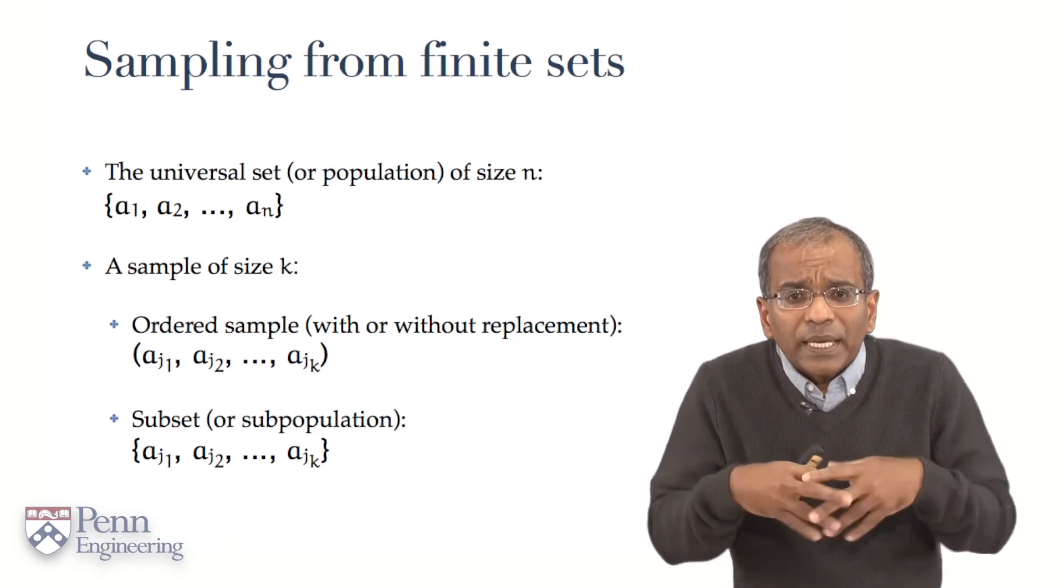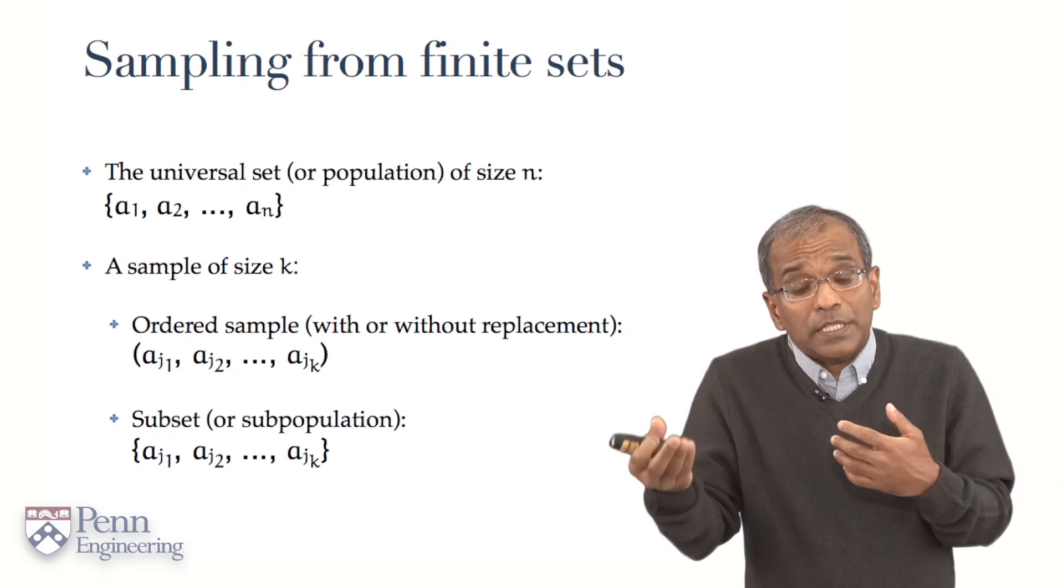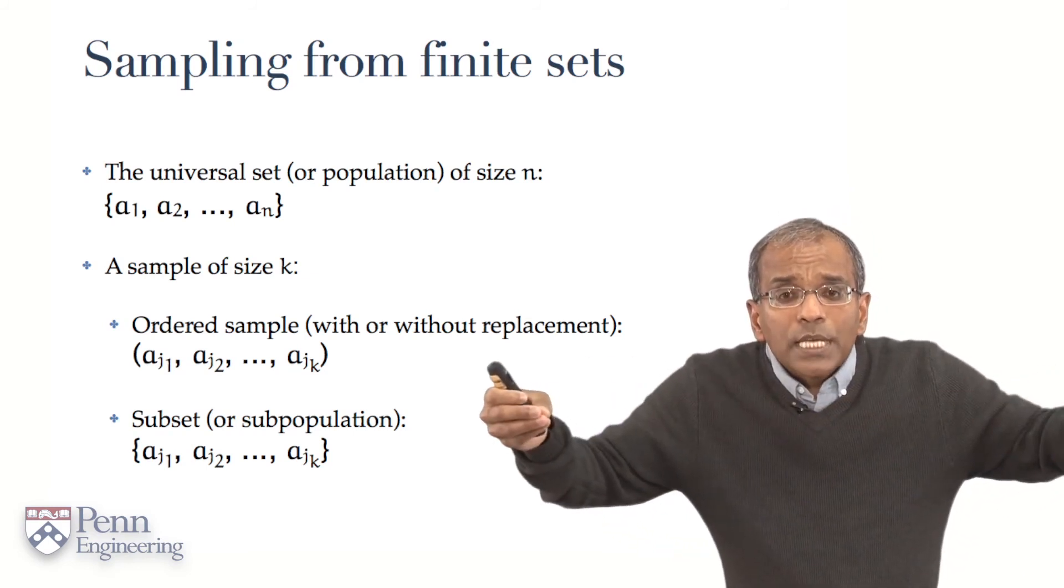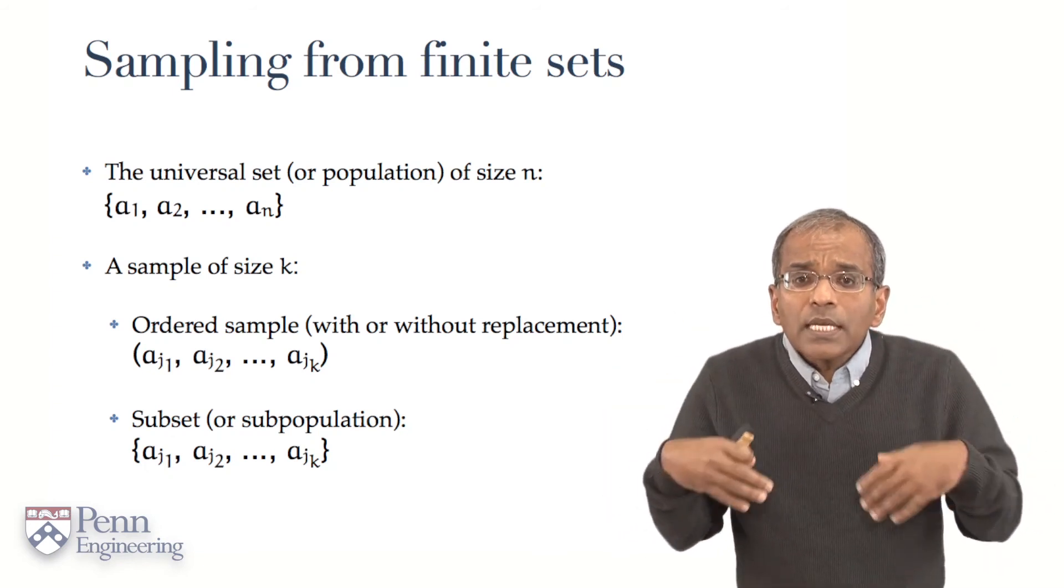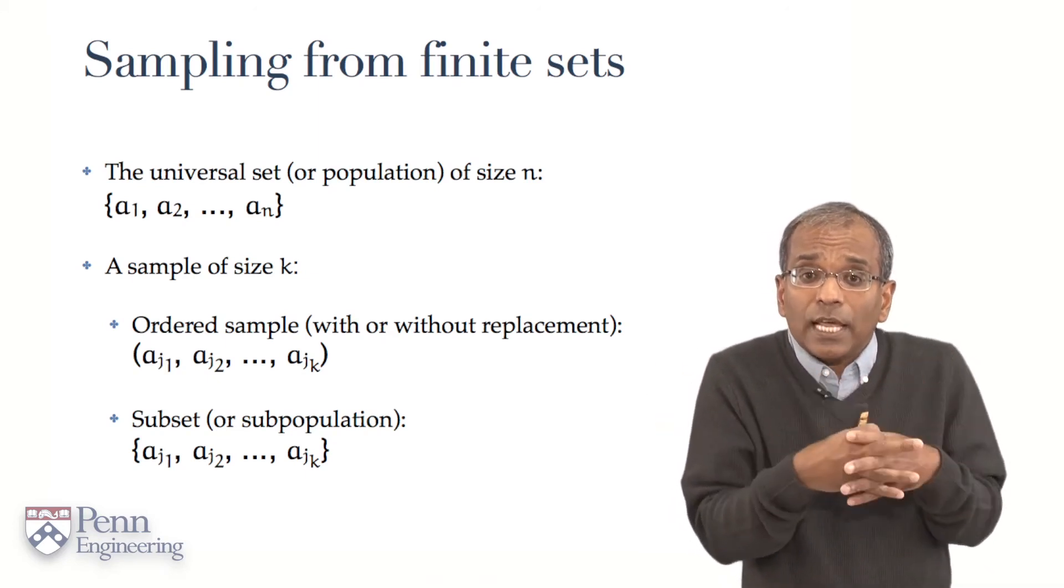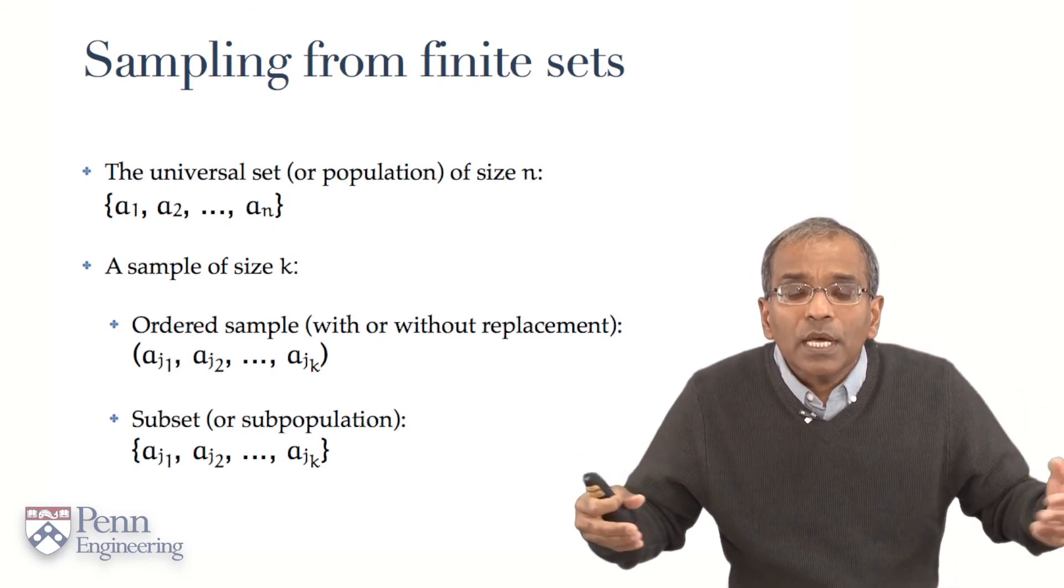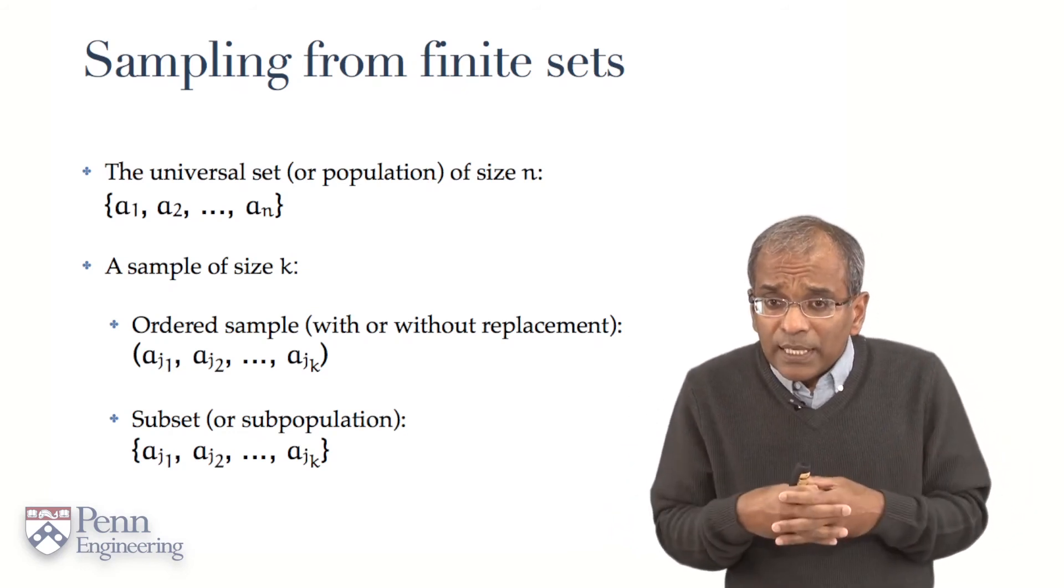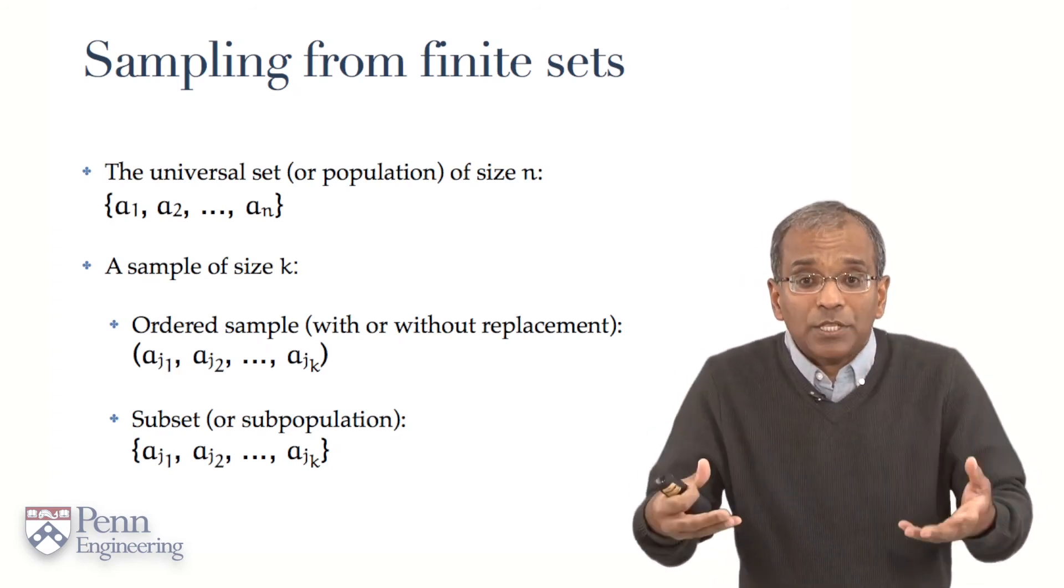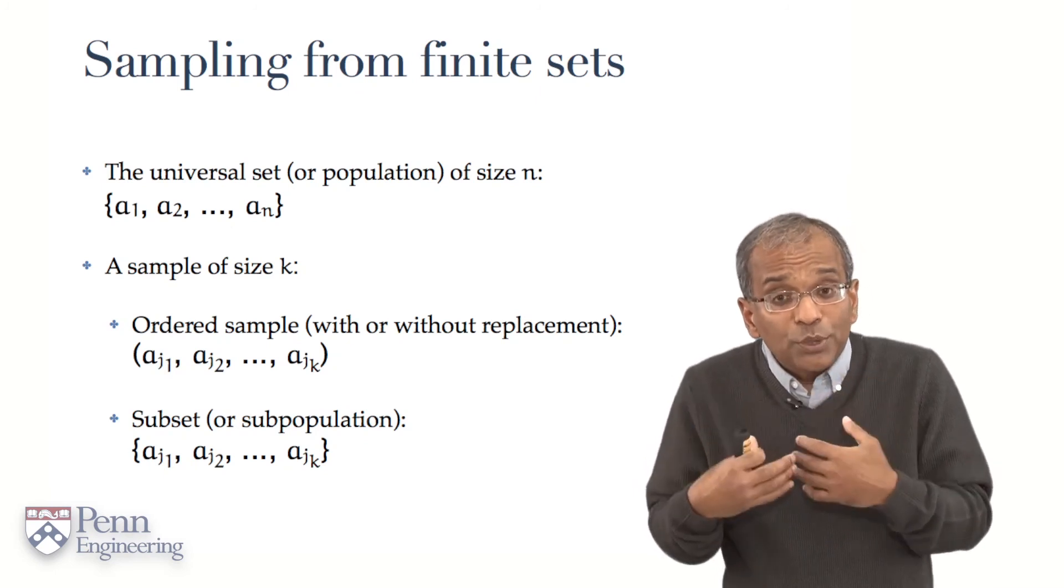Suppose one generates an ordered sample of size k. What should the members of the population be in this ordered sample? To speak about it in abstract, let us identify the indices of the first element. Let's say we call it j1. The index of the second element is a j2th element. The index of the third, j3, and so forth. The index of the last element, jk. The notation is admittedly getting a little cumbrous, but it is unavoidable. Let us say the elements of the abstract sample are a j1, a j2, through a jk.